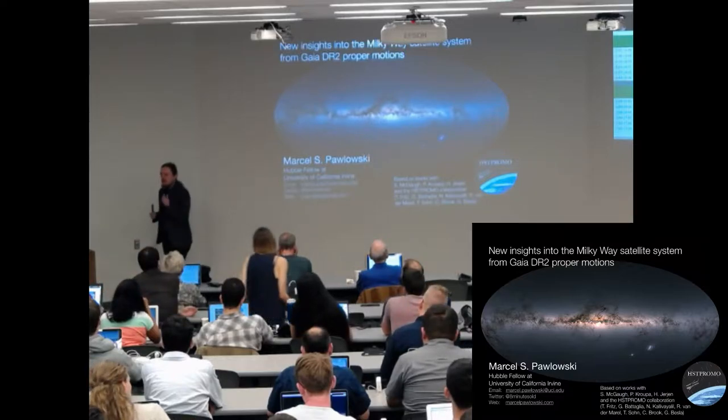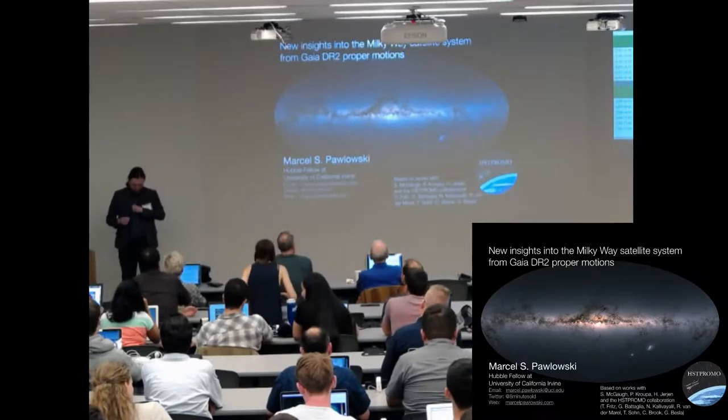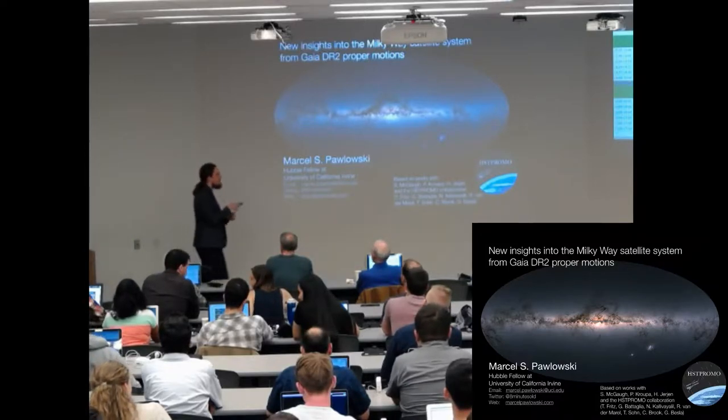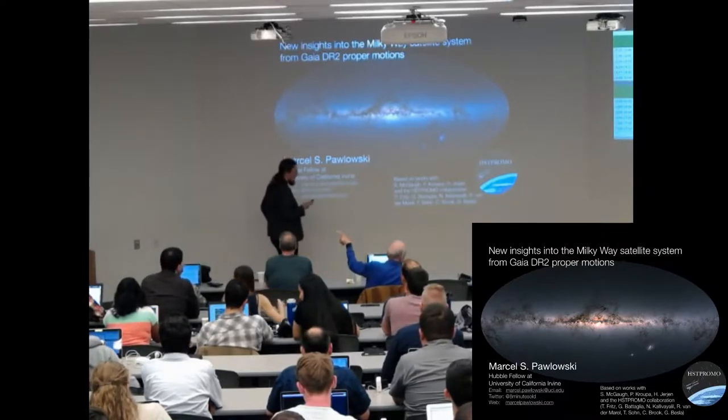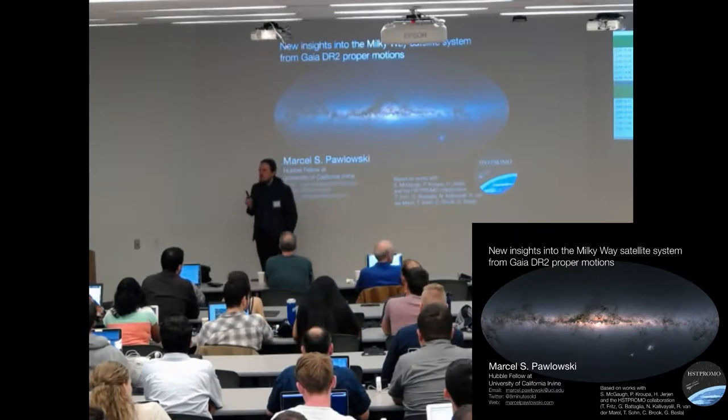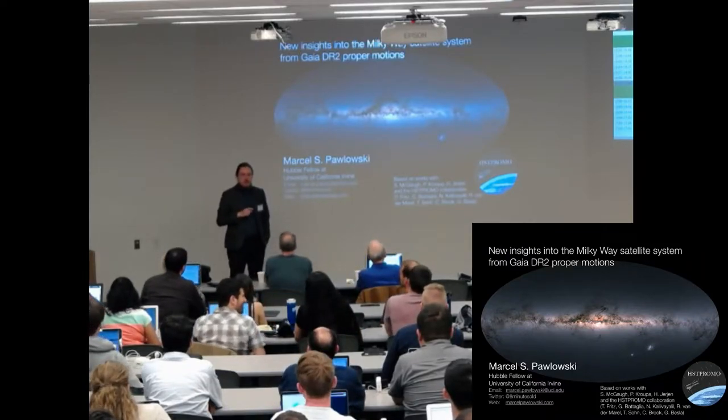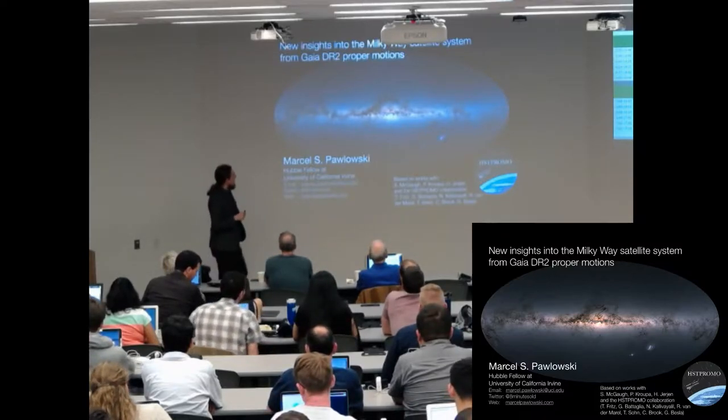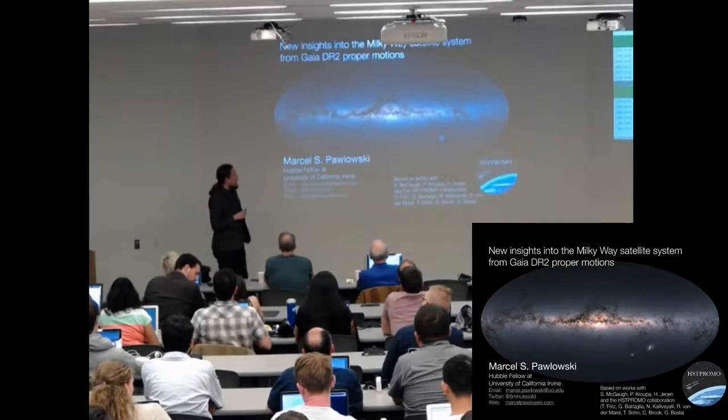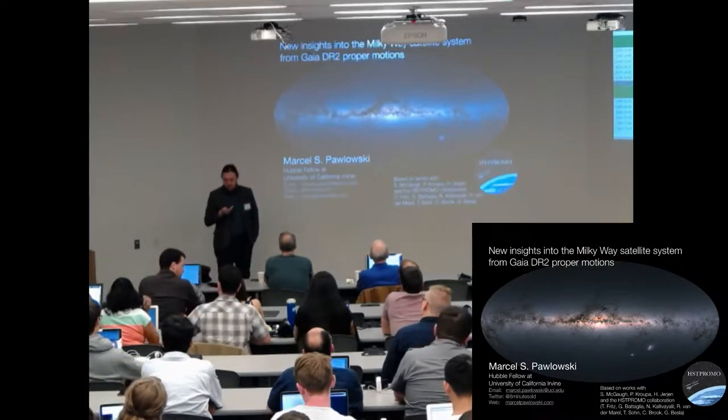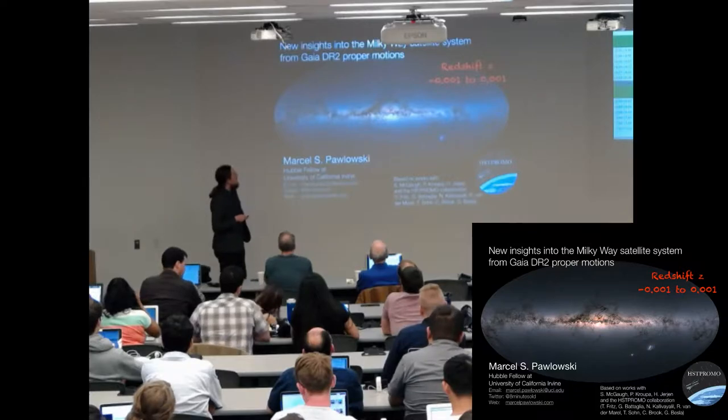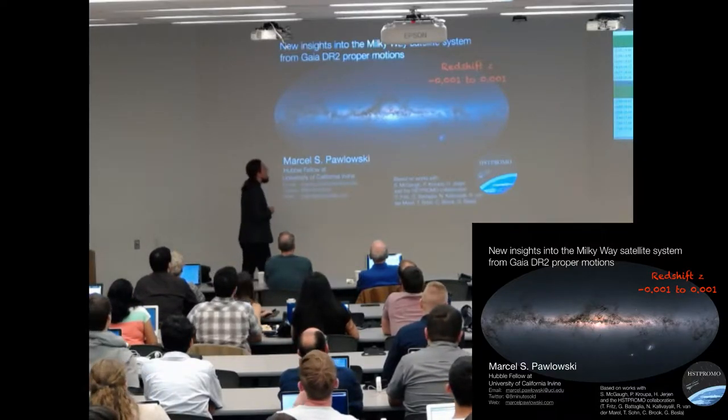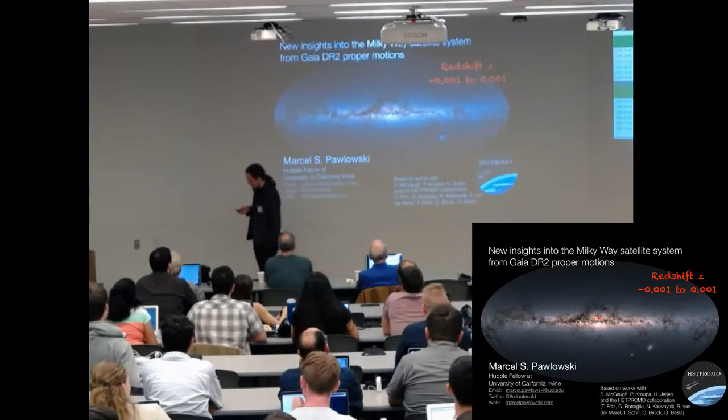I'll switch gears a little bit and talk about Gaia proper motions and the satellite system. You've probably heard about this already, but just in case you're really focused on high redshift, the redshift range I'm working on is negative 0.01 to that. So it's really nearby stuff.